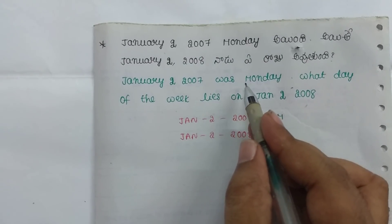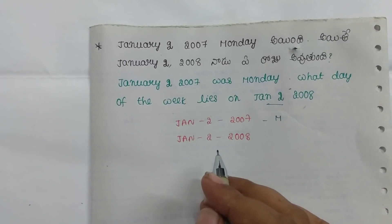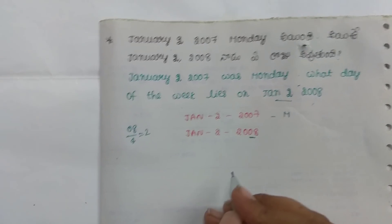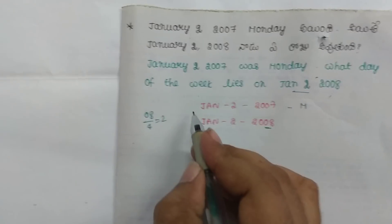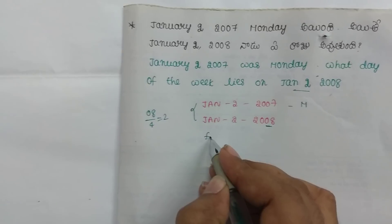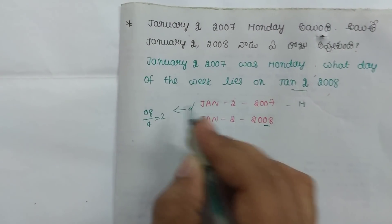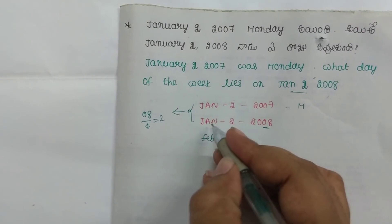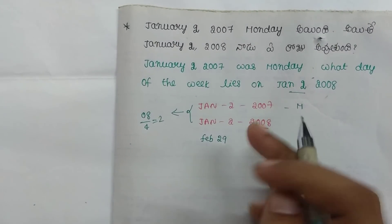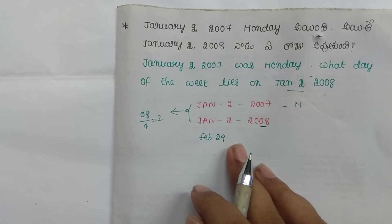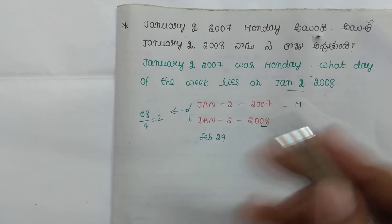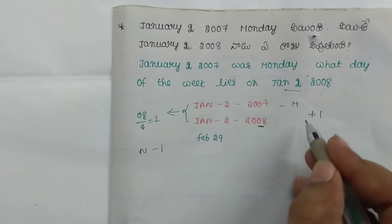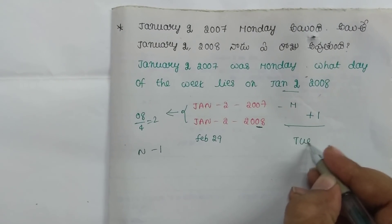January 2007 was Monday. What day of the week lies on January 2018? Okay, so same problem. Today is Monday, after 60 days it will be. I will get to choose the work-out for a month.